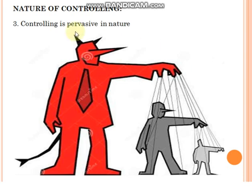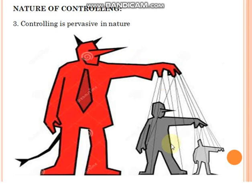In the picture itself, it describes how one person gives instructions to another, who then controls others, and he controls his subordinates. Things are going in a chain process — controlling is pervasive, meaning it spreads throughout the organization.